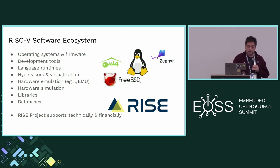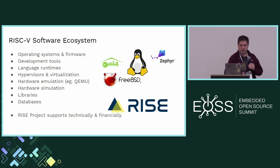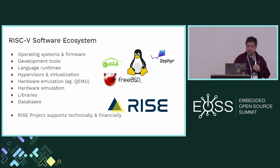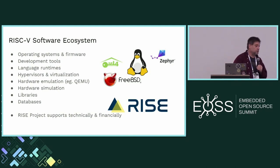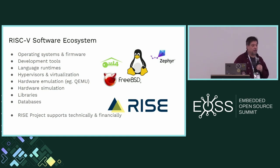The software ecosystem is more my playing field. This includes operating systems, firmware, development tools, libraries, etc. There are a number of large distros now that support RISC-V, including FreeBSD, Zephyr, and Linux of course — and many distros under Linux, including Fedora, Ubuntu, SUSE, etc. There are some gaps that have been identified.